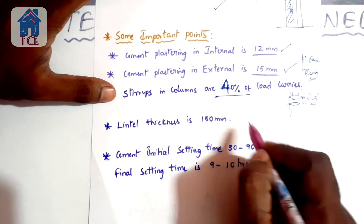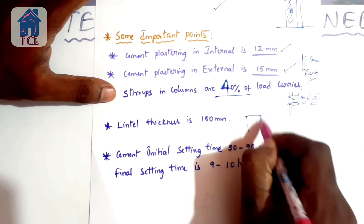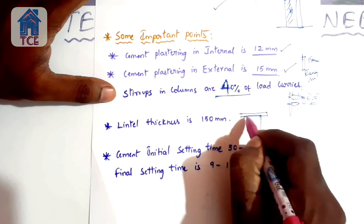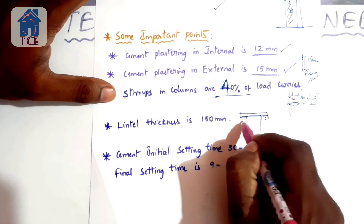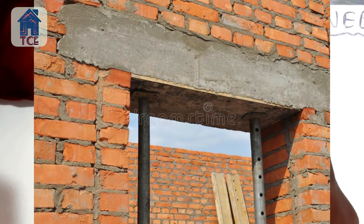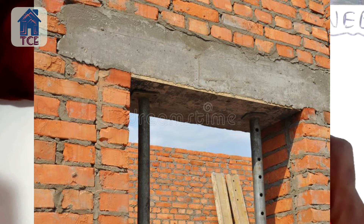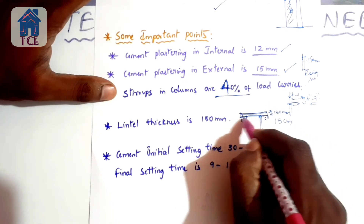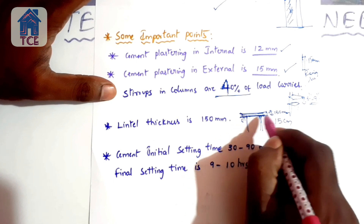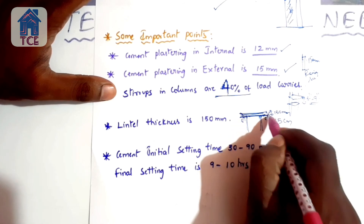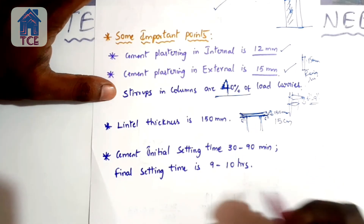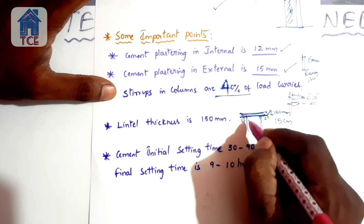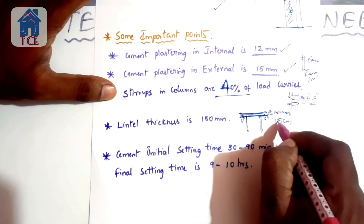The lintel thickness: a lintel is placed over a door or window opening. The standard thickness is 150mm, which is 15cm — approximately half a foot or six inches, not one foot. With the lintel in place, lintel shale is added. The basic rule is that lintel thickness is 15cm with 12mm reinforcement.